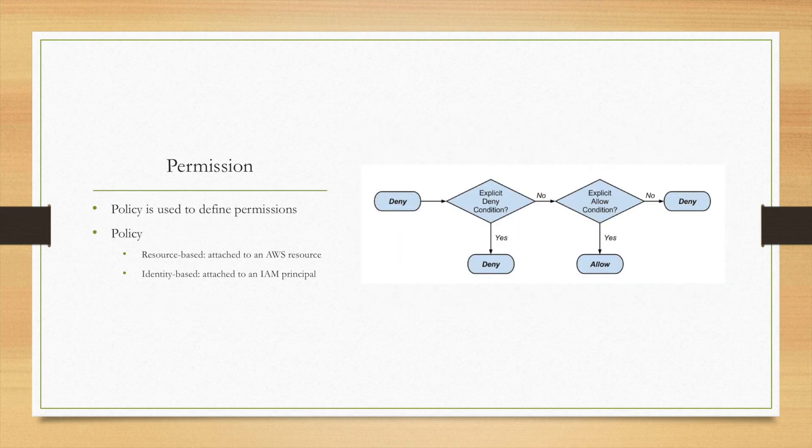For IAM, permission is very important, and we use a policy to define the permissions. A policy mainly has two types. One is resource-based, which is a policy attached to an AWS resource. The other is identity-based, which is attached to an IAM principal.